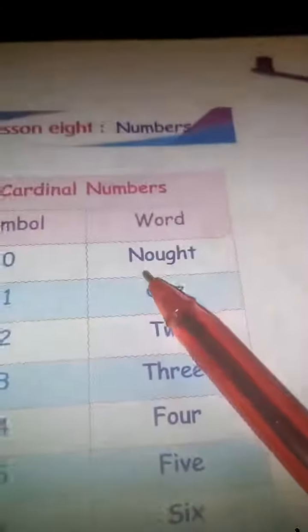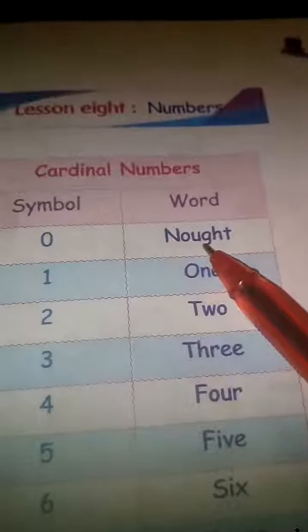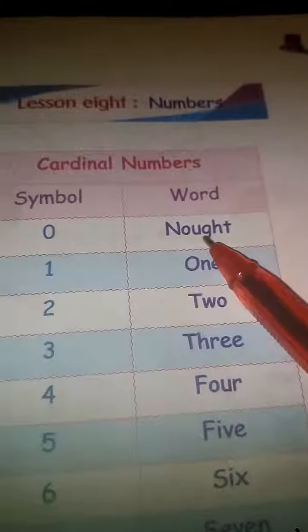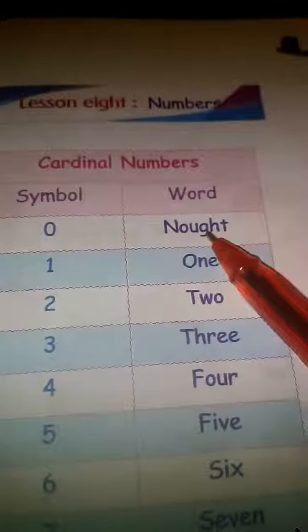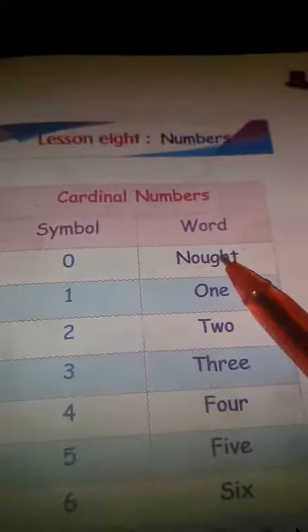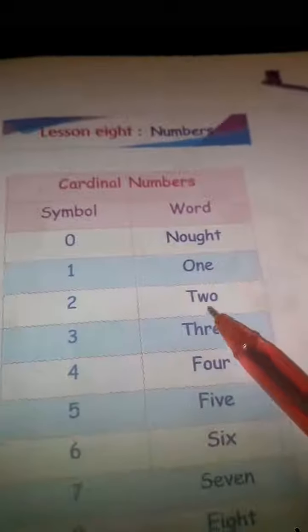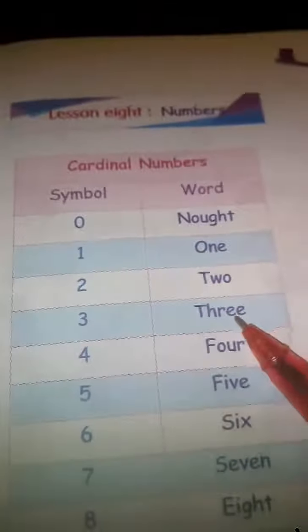So here we have the first one is naught. Naught in English. GH in the middle of the word in most cases is not pronounced, so we say naught. We don't pronounce GH. Naught, one, two, three.